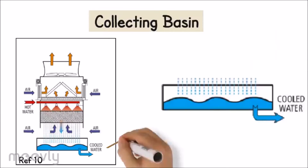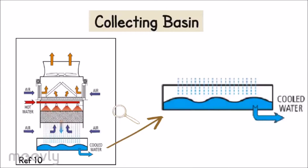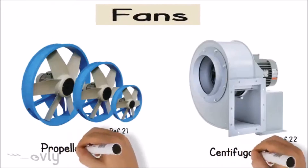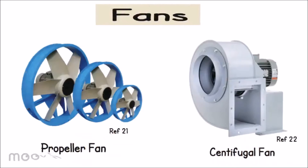The collecting basin is placed on the bottom part of the tower to contain cold water droplets from the tower packing and the drift eliminator. Fans are essential to draw air into the tower for the water cooling process, and the common fans used are propeller fans and centrifugal fans.